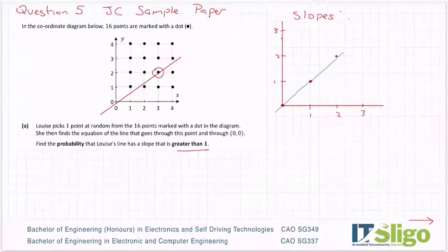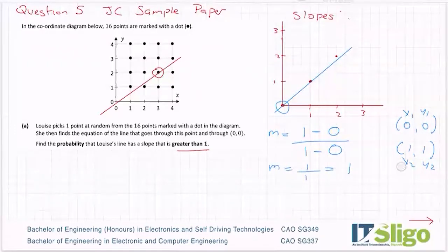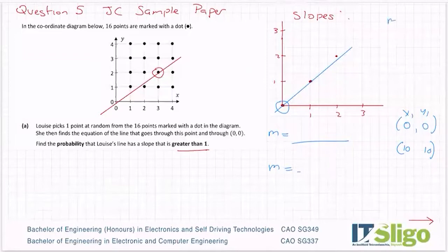How do I know that? Let me show you using the slope formula. So let's find the slope between zero, zero and one, one. So m equals y₂ minus y₁ over x₂ minus x₁. One minus zero is one, one minus zero is one, so that's a slope of one. Now let's take the point ten, ten. The slope formula is y₂ minus y₁ over x₂ minus x₁. So that's ten over ten, which is also one.